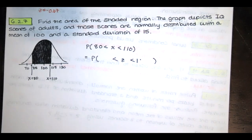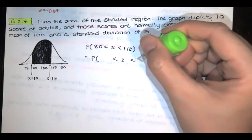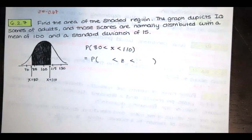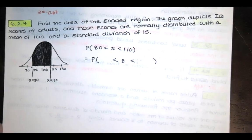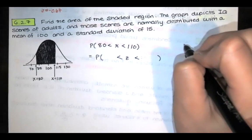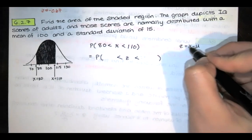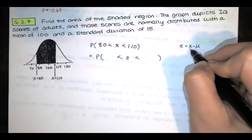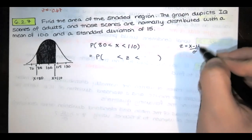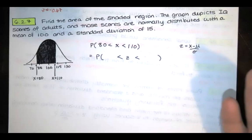We can find those z-scores just using our formulas. So z is equal to x minus the mean. That's giving us a deviation from the mean and then we divide by the standard deviation and that gives us a number of standard deviations from the mean and that gives us our z-score.